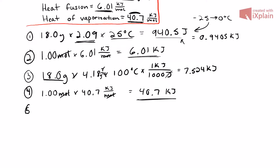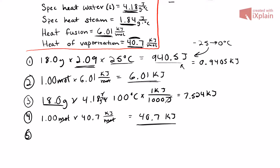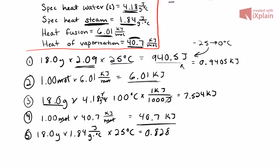Step 5: we find the energy going from 100°C to 125°C using the specific heat of steam, which is 1.84. So: 18.0 grams times 1.84 J/(g·°C) times a temperature change of 25°C. This gives us 0.828 kilojoules.